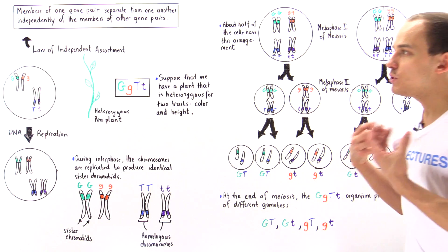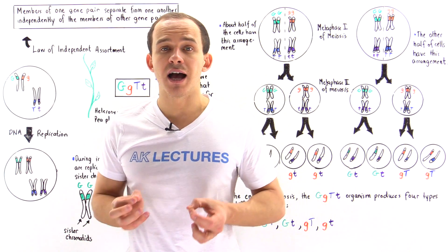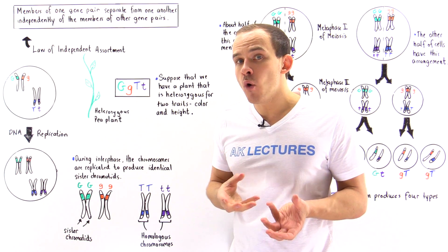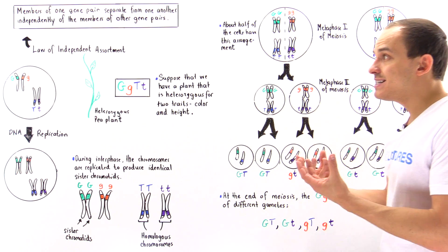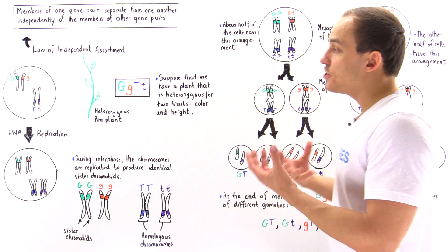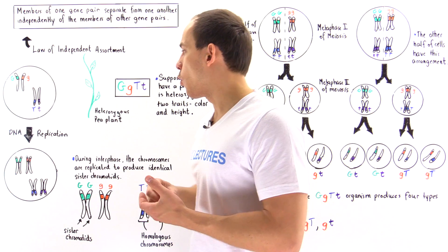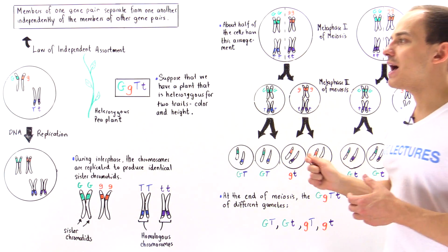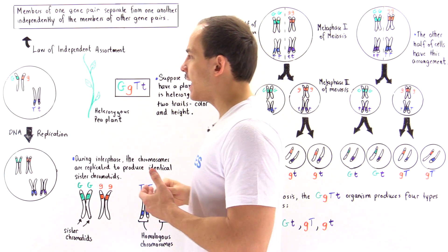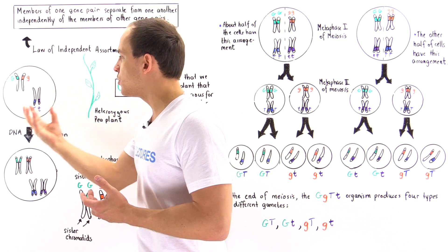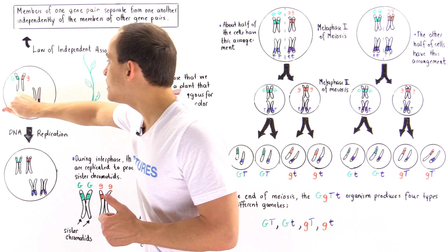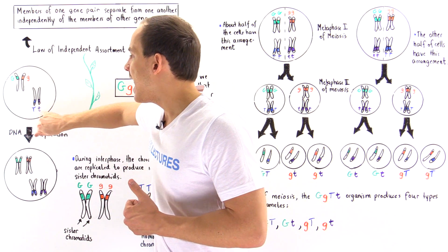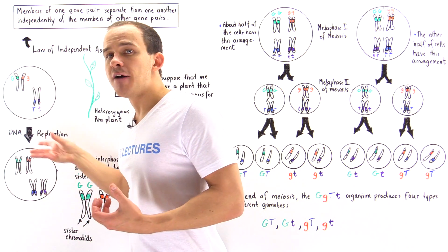The law of independent assortment exists because of the process of meiosis that takes place when the organism forms gametes before fertilization. Before meiosis I can begin, the cell must undergo interphase, and during interphase, DNA replication takes place. Each chromosome within the chromosome pairs is replicated, producing the following cell.